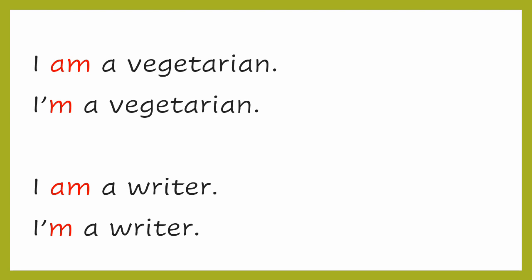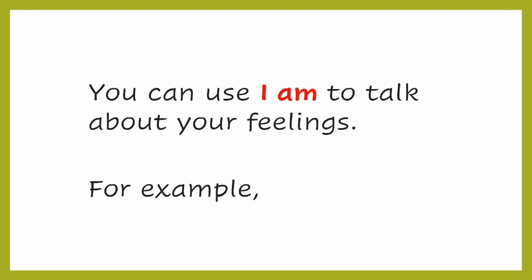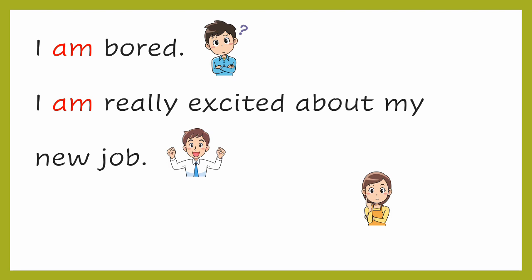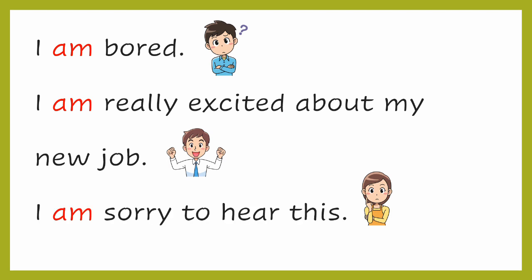Next, you can use I AM to talk about your feelings. For example: I'm bored. I am really excited about my new job — I'm really excited about my new job. I am sorry to hear this — I'm sorry to hear this. Notice, if you use I and AM together, you will sound more natural while speaking in English.